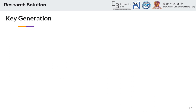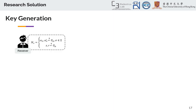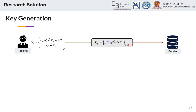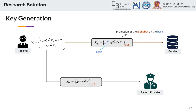The key generation is as follows: the receiver generates the secret key for itself, then uses the secret key to generate the public key for the sender. This public key consists of two parts — one part is the basis and the other is the projection of each symbol of the alphabet onto the basis. The other part of key generation is the trapdoor key generation. The trapdoor key is provided to the pattern provider to issue trapdoors for any arbitrary patterns — it is a randomized projection of symbols of the alphabet onto the basis, where the random part is to avoid the forgeability of trapdoors.